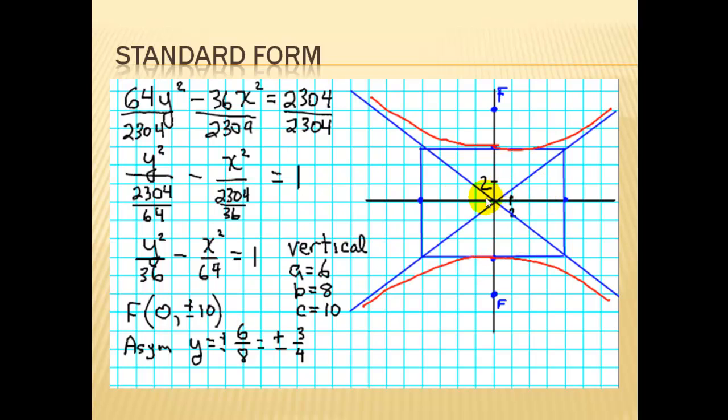To sketch the graph, since it's vertical, we go up 6 units and down 6 units and place our vertices. And we go in the perpendicular direction on the minor axis, b units, so 8 units, and draw our bounding rectangle. That's not part of the hyperbola. It's a tool we use for sketching the graph of the hyperbola.